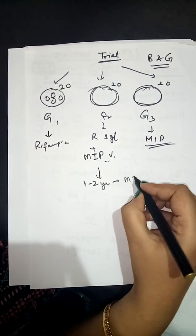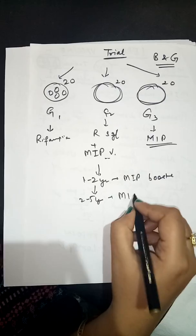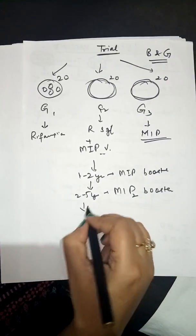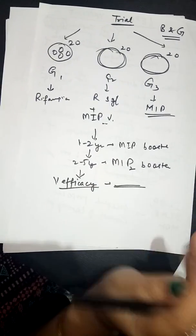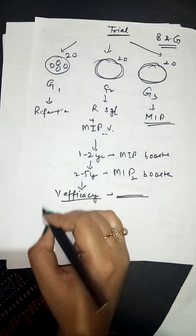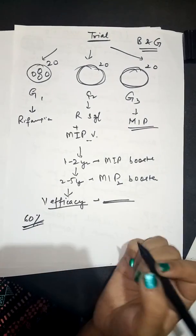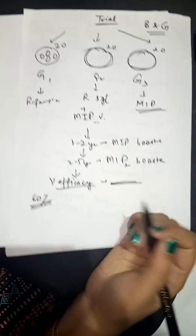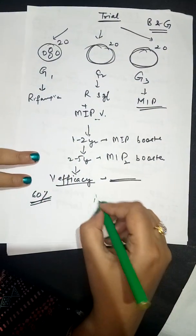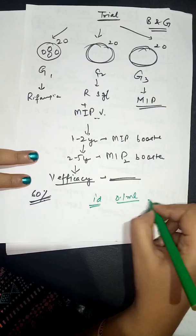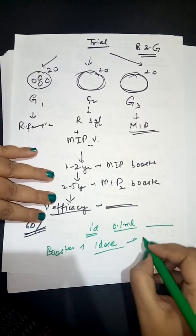In both groups where MIP is given, a booster of Mycobacterium Indicus Prani will be given after one to two years, and a second MIP booster after two to five years. Vaccine efficacy will be tested after five to seven years. It is estimated that if this vaccine works properly, 60% of leprosy cases will be reduced. The vaccine is given intradermally, two doses of 0.1 ml each in both arms; for boosters, just one dose in any one arm.